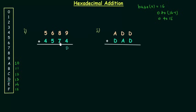8 plus 7 is 15 and we represent 15 as F. So we have sum equal to F. 6 plus 5 is 11 and 11 is represented by B. So sum is equal to B. 5 plus 4 is 9. In this example no carries involved and our answer is 9BFD.